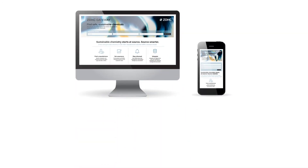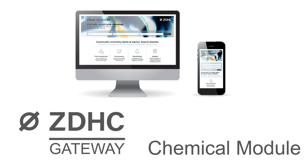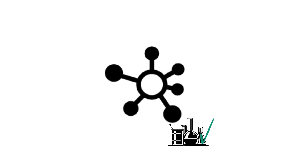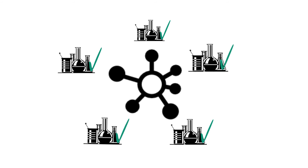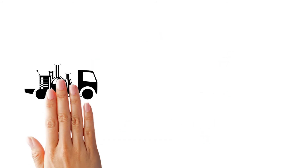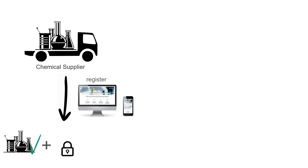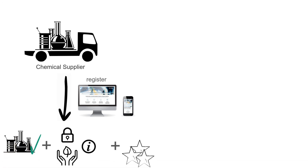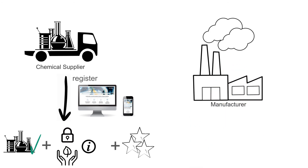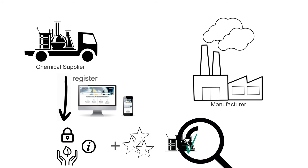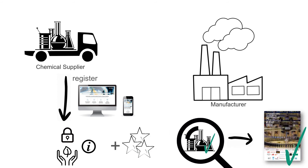We have created an online portal called the ZDHC Gateway Chemical Module — a database of MRSL conforming chemical formulations where chemical suppliers can register their products, including safety and sustainability information, as well as the level of conformance with the ZDHC MRSL. Manufacturers can use this database to easily find chemical formulations meeting the ZDHC MRSL standard.